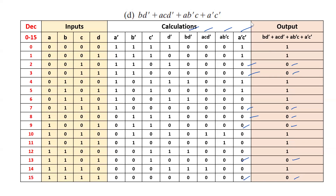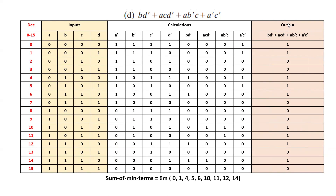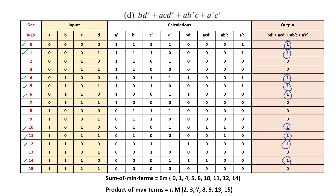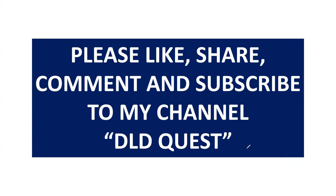Now we write the sum of minterms and product of maxterms. Sum of minterms — the decimal equivalents where the output is 1 — are: 0, 1, 4, 5, 6, 10, 11, 12, and 14. The product of maxterms — the missing numbers from 0 to 15 — are the maxterm numbers: 2, 3, 7, 8, 9, 13, and 15. This completes the fourth boolean function. I hope you understand this solution for the given problem. If you like my video, please like, share, and subscribe to my channel. If you have any doubt, please comment in the comment box — I will definitely help you. Thank you.